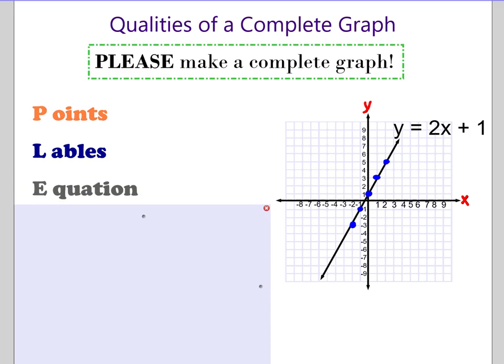The next thing is going to be the equation. So if I'm graphing an equation, I am going to include it right here. In this case, it's y equals 2x plus 1. I'm going to put it next to the line, or if I have multiple lines on there, somewhere on the graph so I can see what the equation is that I'm graphing.